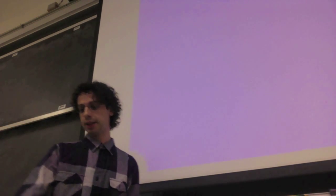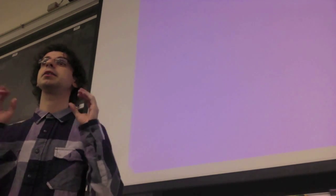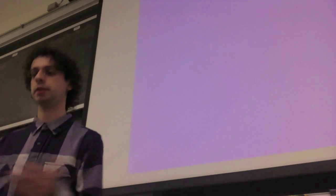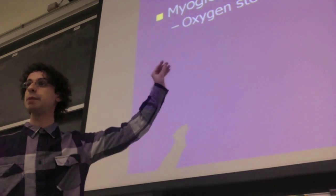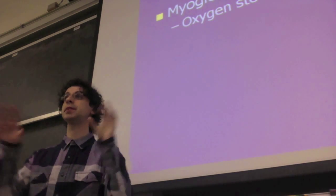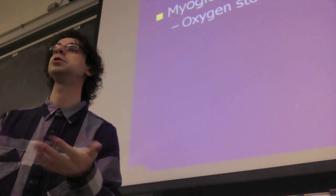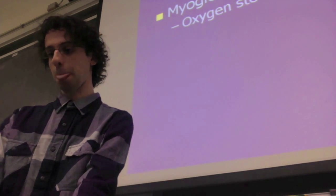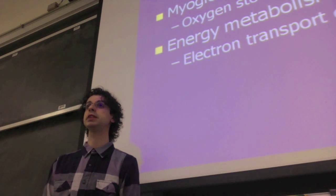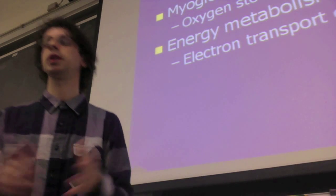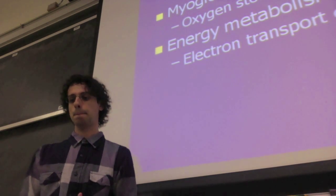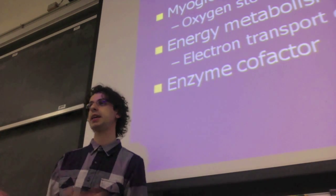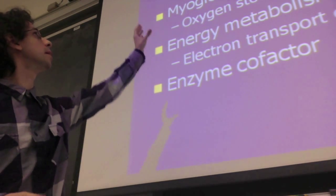Iron is primarily part of the heme group in hemoglobin in red blood cells, enabling them to carry oxygen to our tissues and bring back carbon dioxide. It is also in myoglobin in muscle cells, where it temporarily stores oxygen until used for oxidative reactions to extract energy from nutrients. Iron is also essential for the electron transport chain in our mitochondria, and is a cofactor of many enzymes. Its primary functions are carrying and storing oxygen in the body.